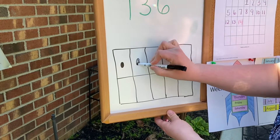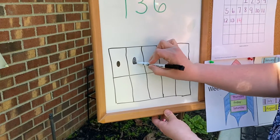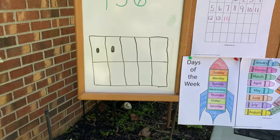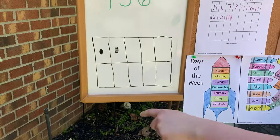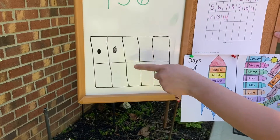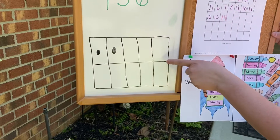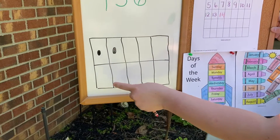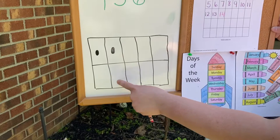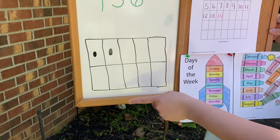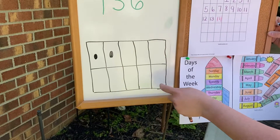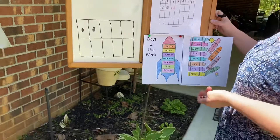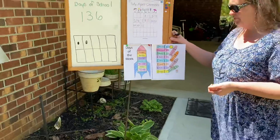But how many dots do we need left to fill up our board? Let's count them: one, two, three, four, five, six, seven, eight. We need eight more dots to fill up our board.